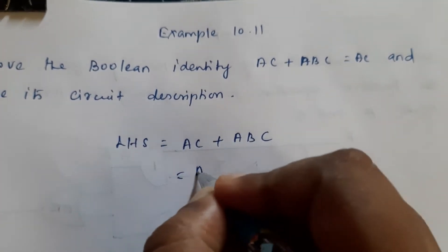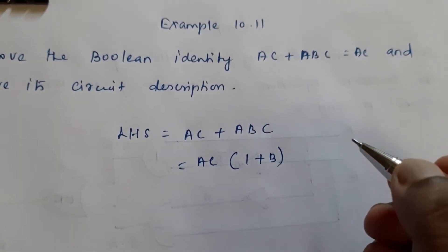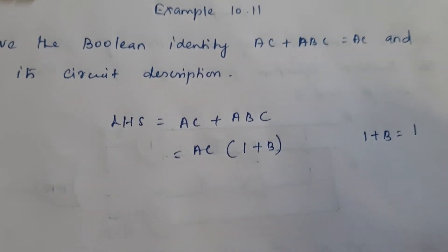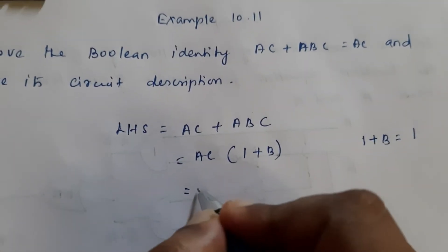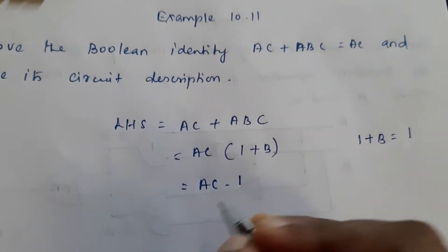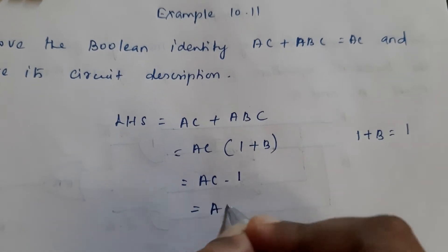So we can write AC outside. So, AC times (1 + B). So, 1 + B is equal to what? 1. So we can write this is AC times 1 which is AC.